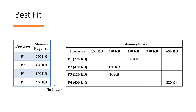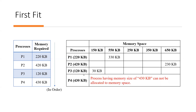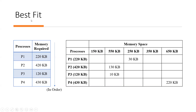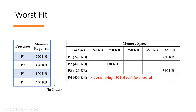Looking at best-fit, all four processes are allocated successfully. Compared to first-fit where P4 could not be allocated, best-fit achieves full allocation by selecting partitions that leave the minimum remainder. The key difference is that first-fit picks the first available sufficient partition, while best-fit selects the partition where the remaining fragment will be least.